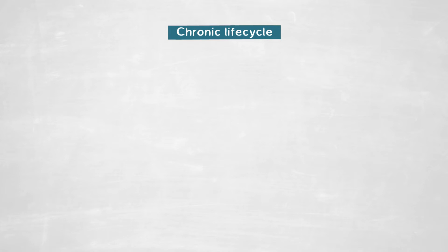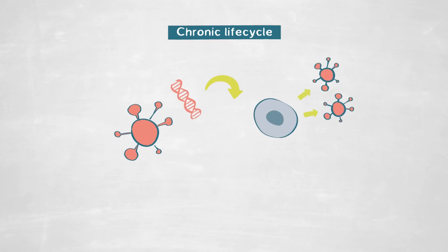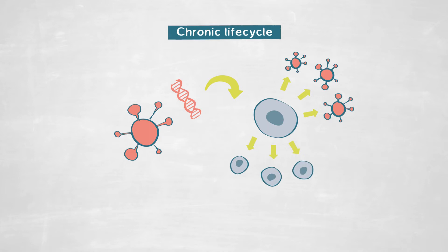Viruses can also produce chronic life cycles, which means that a virus infects a cell and constantly produces progeny, but without lysing the host. This is a particularly interesting life cycle, because it shows us that viruses and hosts have found a way to co-exist where both can be successfully reproducing themselves and co-exist in time.